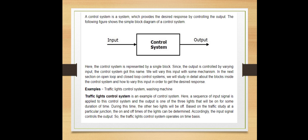Traffic light control system is an example of control system. Here a sequence of input signal is applied to this control system and the output is one of the three lights that will be on for some duration of time.